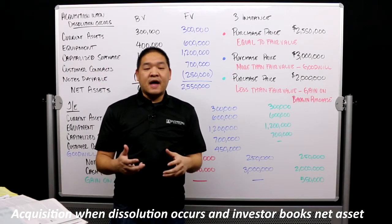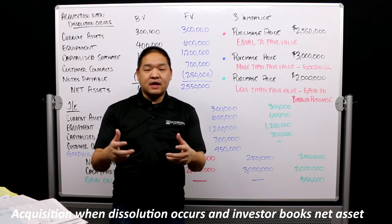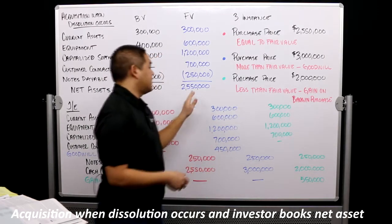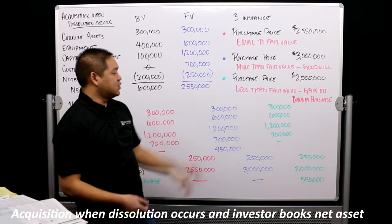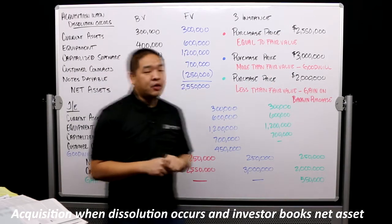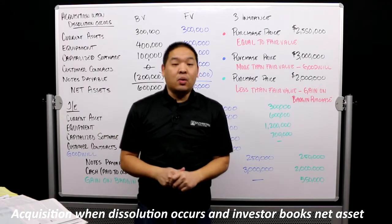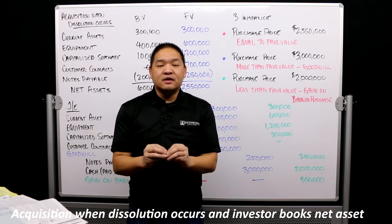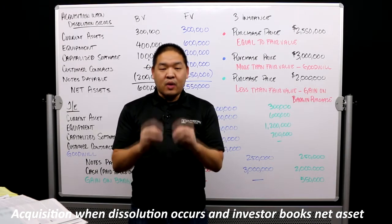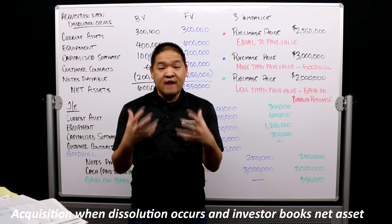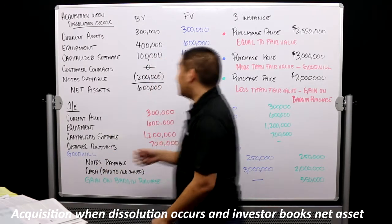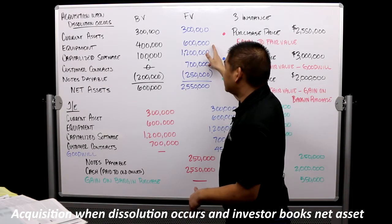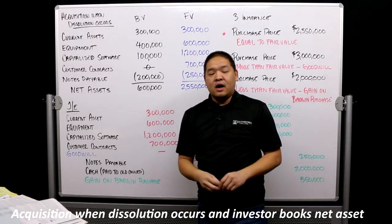Now the idea of gain on bargain purchase - what happens if we pay less than fair value? Less than fair value: $2 million versus $2.55 million. In that case we are going to book an unrealized gain on a bargain purchase, because we are gaining from this bargain. We will still book all the assets and liabilities acquired at fair value - they're really valued at $2.55 million - and then we put an unrealized gain on bargain purchase.